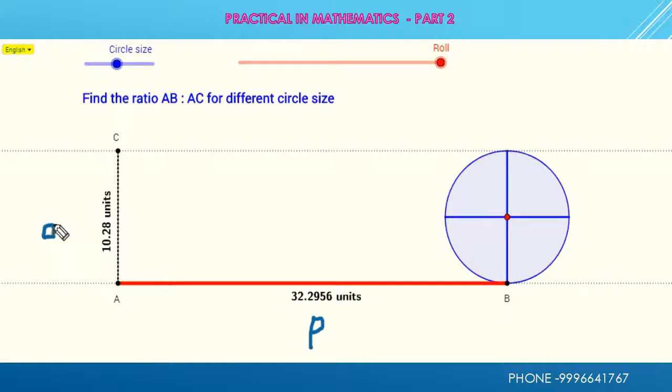And diameter of circle is 10.28. Now take up the calculator again and divide this P, that is 32.2956, by 10.28. You get the same value of pi as 3.14. Value of pi is equal to P upon D.